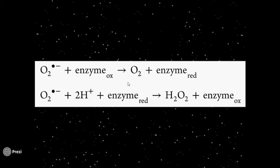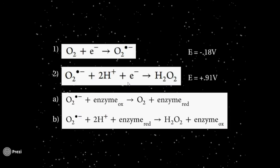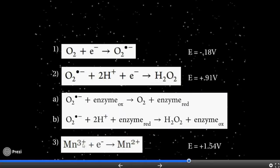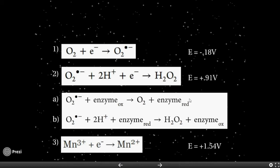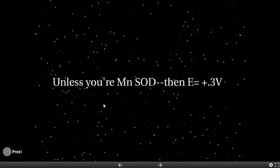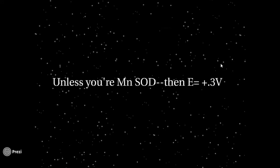Let's notice something interesting here. Since all manganese superoxide dismutase does is move around a couple of electrons, one can calculate the reduction potential of the reaction. Reaction A is the opposite of reaction 1, and reaction B is the same as reaction 2. Since the first reaction has a reduction potential of −0.18V and the second reaction's is +0.91V, the electrons will proceed favorably. However, the actual reduction of Mn3+ to Mn2+ is +1.54V — meaning if manganese were reduced by reaction A, it would not give up its electron in reaction B. For this reaction to be favorable, manganese needs a reduction potential between −0.18V and +0.91V. Conveniently, the reduction potential of manganese superoxide dismutase has been experimentally determined to be +0.30V, right in the required range.